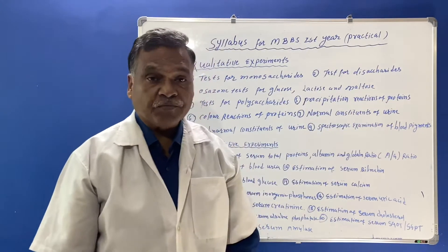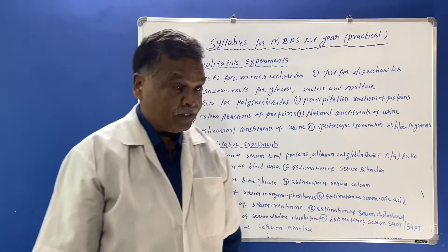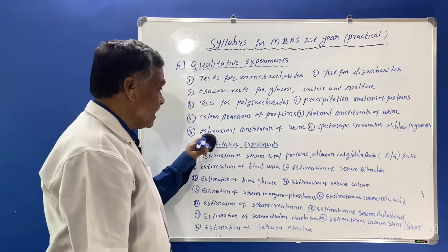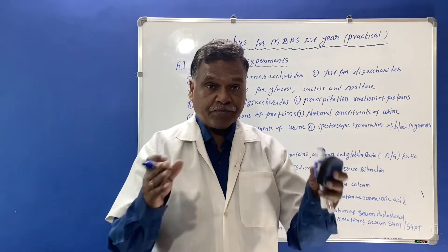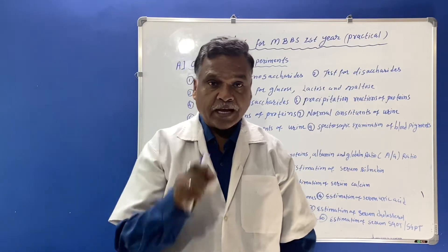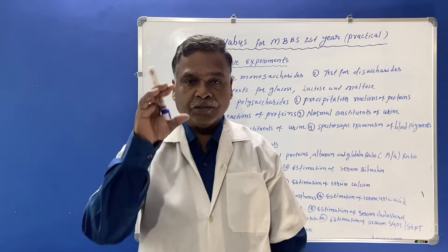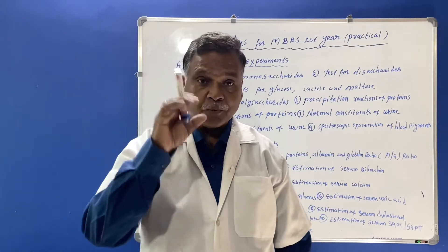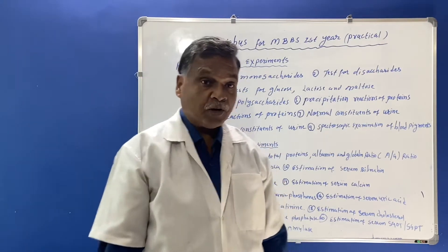The normal constituents of urine — students should find out the normal constituents of a given urine sample in the laboratory. Then abnormal constituents of urine: in the examination, a urine sample is given to the students and they have to find out the abnormal constituents present. For example, glucose and protein may be added to the sample, and students must identify which abnormal constituents are present.